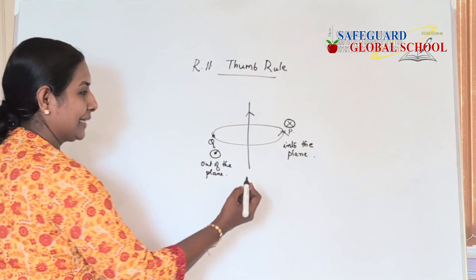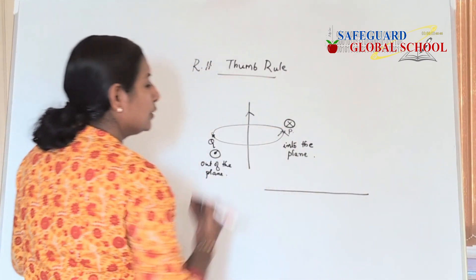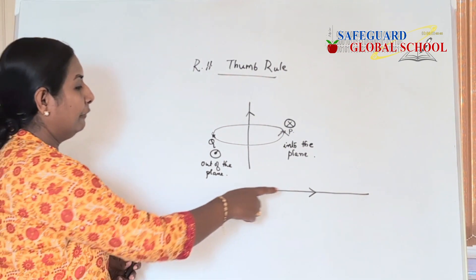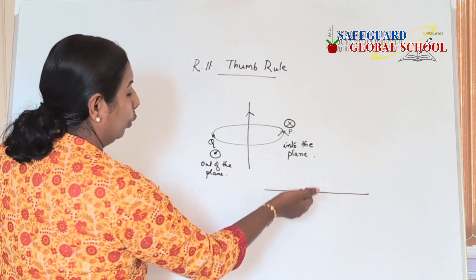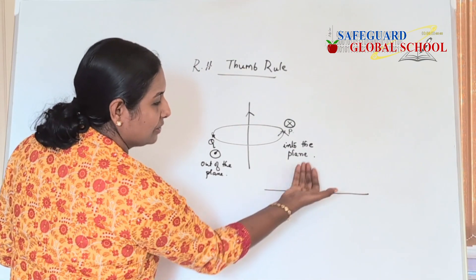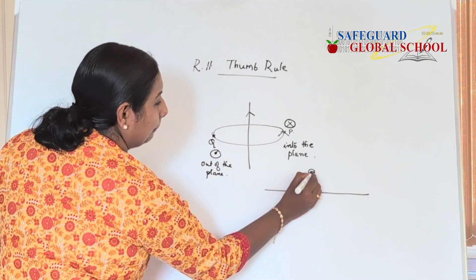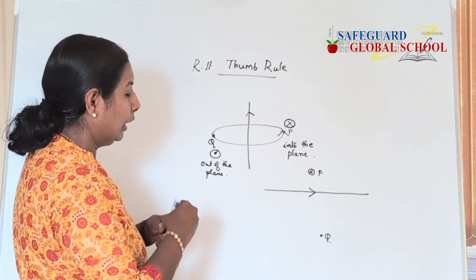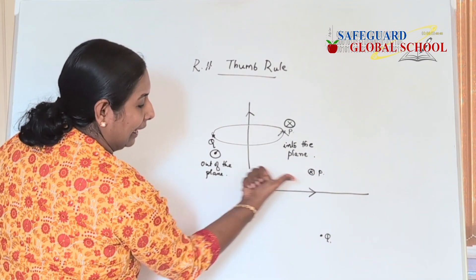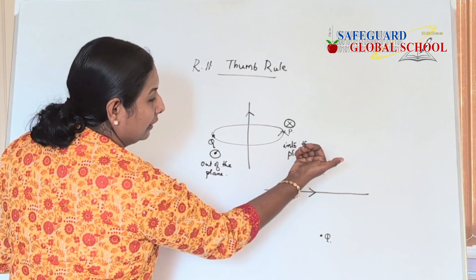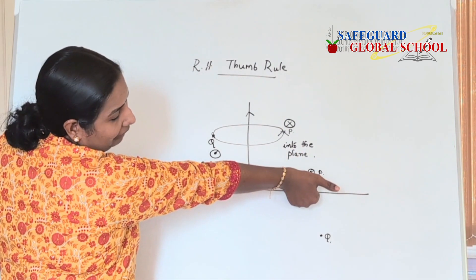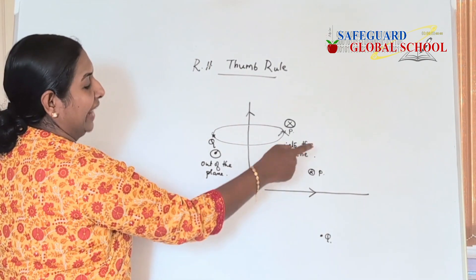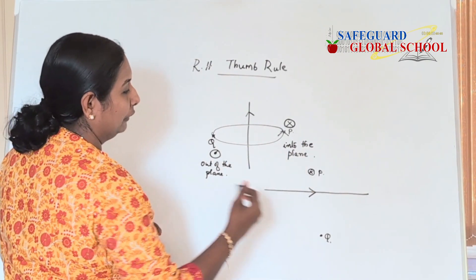So let us change the orientation of this conductor. How will we apply this right hand thumb rule here? While we grasp this conductor such that the current is in this direction, when we mark points P and Q you have to understand what will be the direction of the magnetic field. When we grasp the conductor like this, the current is in this direction and the curling of fingers is in this direction. So at point Q the magnetic field is into the plane of the board, and at point P it is coming out of the plane of the board.